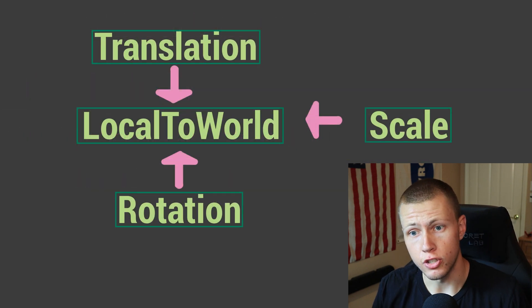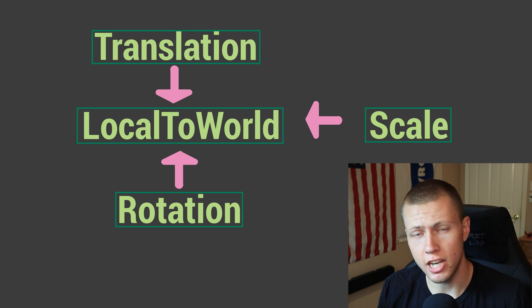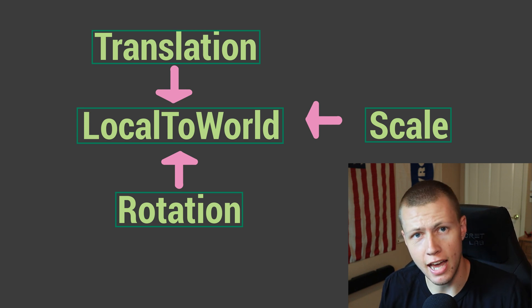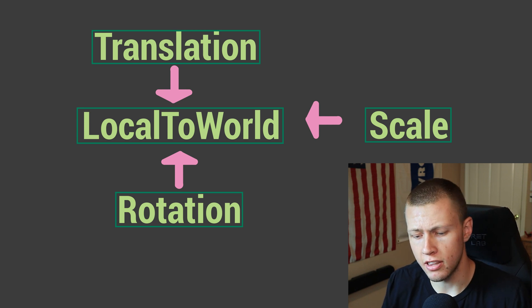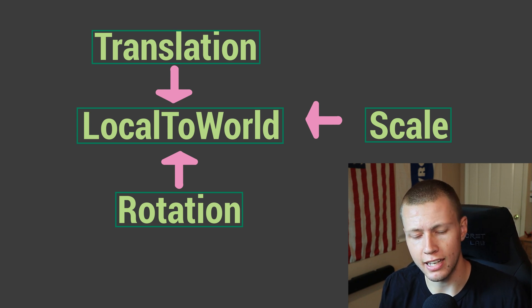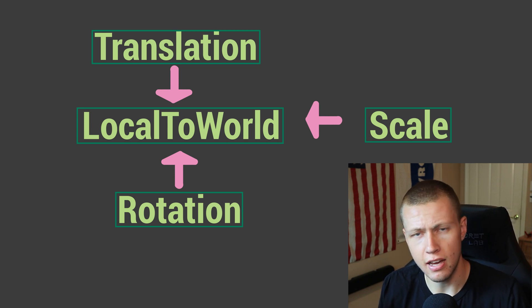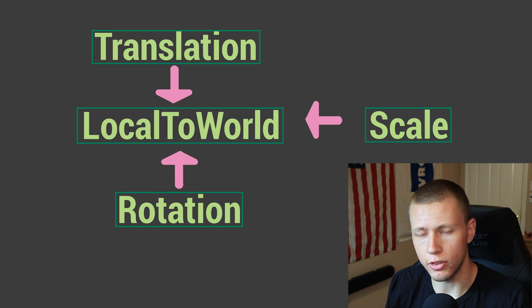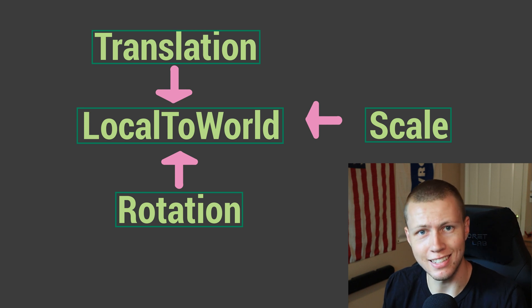Using the Translation, Rotation, and Scale components, we can calculate the LocalToWorld component — which is the end-all be-all of where the entity exists in our world.